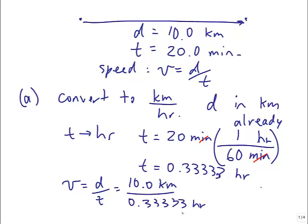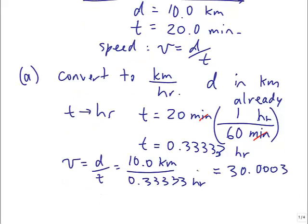And we get 10 divided by 0.33333 equals 30, right? But actually in my calculator it says 30.0003, that's actually a rounding error there, but I'm going to round that off to three significant figures, 30.0, and that is kilometers per hour.